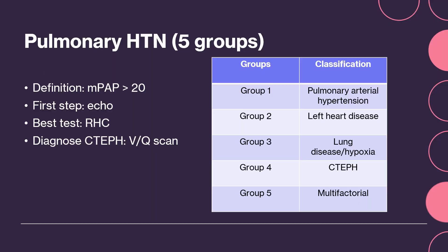Pulmonary hypertension is an elevation in the pulmonary arterial pressure greater than 20. There are multiple etiologies or causes, and we break those up into five groups.